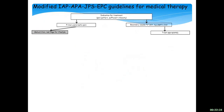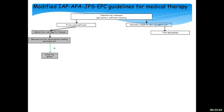Coming back to the treatment approaches: of course, you have to consider whether there are any red flags for malnutrition, alcohol behavior, smoking, etc. If this is the case, treat that — try to get the patients abstinent, reduce tobacco consumption, improve nutritional status. Even though not in RCTs, it has been shown that this also improves health quality and then improves pain.